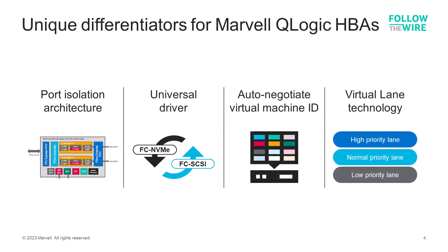Fiber Channel is standards-based, so all components operate to the same basic requirements and interoperability is key. However, there are some ways that manufacturers can differentiate their products. Here are the key differentiators in Marvell QLogic HBA technology that deliver true customer benefits. The first is port isolation architecture.